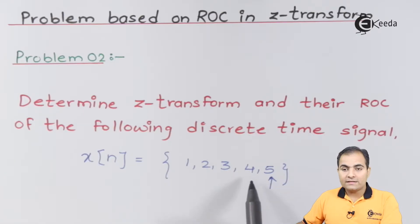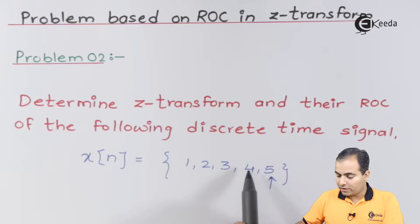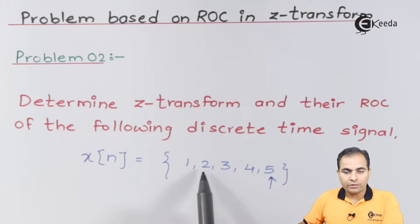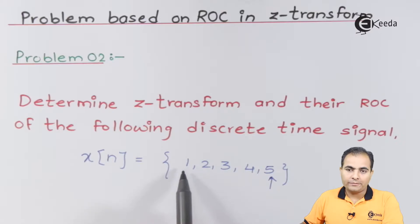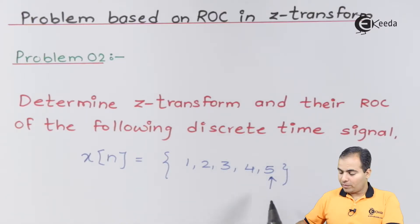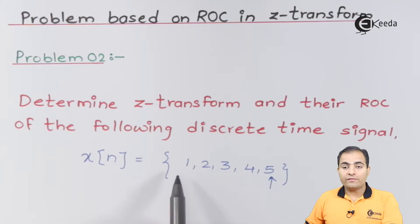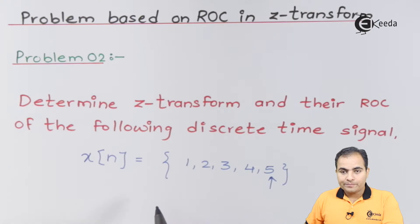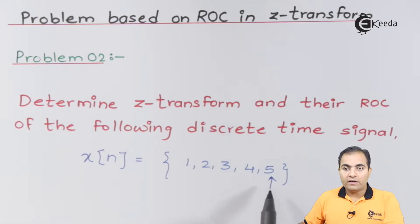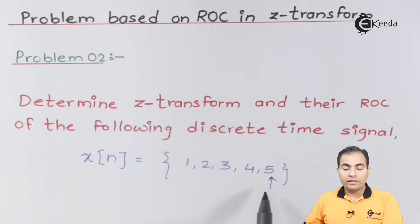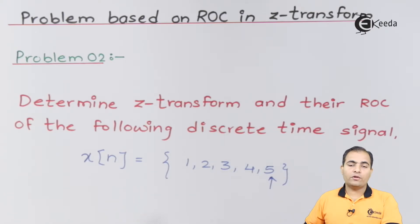Since the origin is at the rightmost position, all the samples are available on the left-hand side of that origin, which means the instants are negative. At minus one we have amplitude four, at minus two amplitude three, at minus three amplitude two, and at minus four amplitude one. The arrow gives us the idea about instances — since the arrow is on the rightmost side, all samples are on the left, so all instants are negative. We will first find the Z-transform and then move on to the ROC.